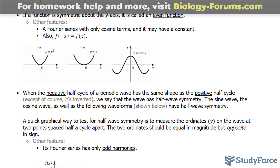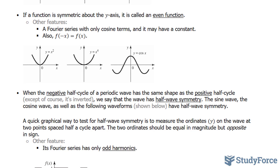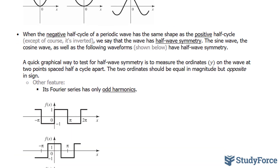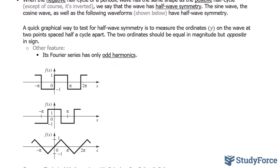When a negative half-cycle of a periodic wave has the same shape as the positive half-cycle except that it's inverted, we say that the wave has half-wave symmetry. The sine wave, cosine wave, as well as the following waveform shown below, all exhibit half-wave symmetry.